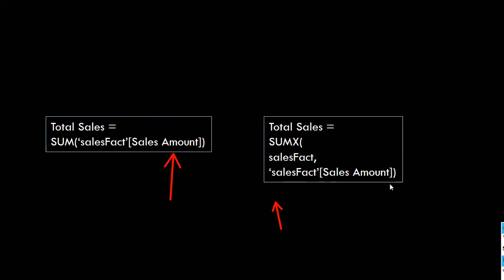I'll explain context filters a little later so you'll be able to understand, and we'll revisit this topic. Both of these functions can produce the same result — if you use the same measure on the sales fact table, both SUM and SUMX produce the same total sales value. The difference is that SUMX iterates each and every row, whereas SUM takes a single column as an argument and performs the sum for the entire column in one go.